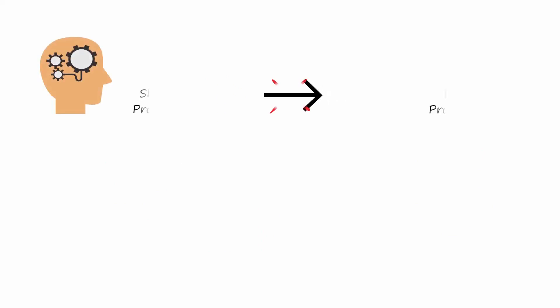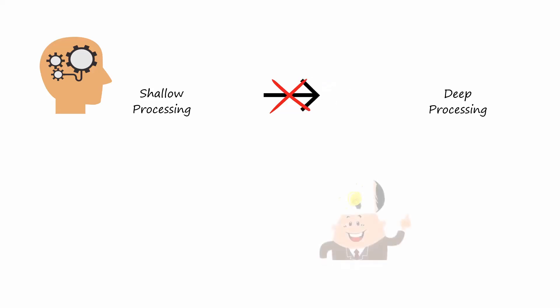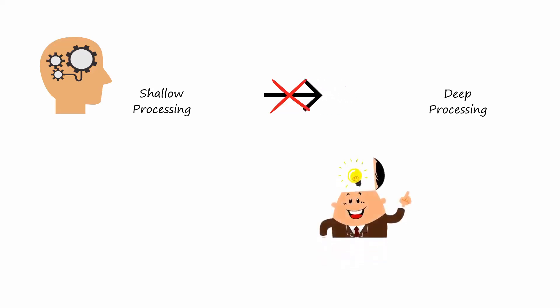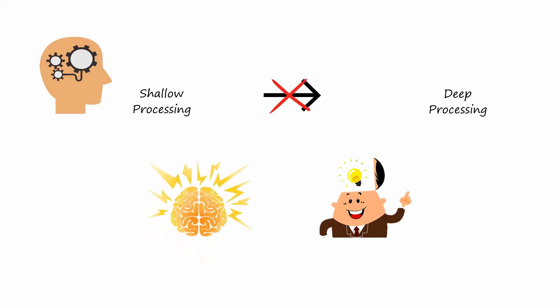Craig and Lockhart also suggest that information processing does not happen in a fixed sequence from shallow to deep. Our brain decides which information should be processed at a superficial level and which at a deeper level. This means we can perceive meaning directly without first going through basic surface-level processing.